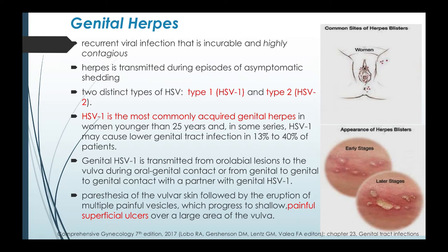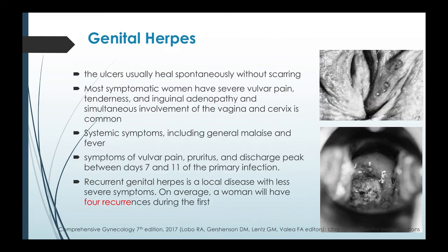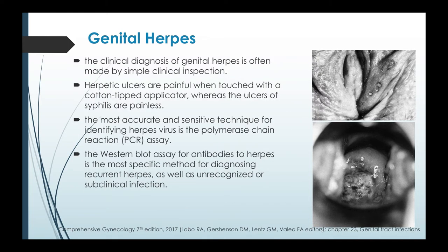The ulcers usually heal spontaneously without scarring. Most symptomatic women have severe vulvar pain, tenderness, and inguinal adenopathy, and simultaneous involvement of the vagina and cervix is common. Systemic symptoms including general malaise and fever are also common. Symptoms of vulvar pain, pruritus, and discharge peak between days 7 and 11 of the primary infection. Recurrent genital herpes is a local disease with less severe symptoms, and on average a woman will have four occurrences. The clinical diagnosis of genital herpes is often made by clinical inspection.